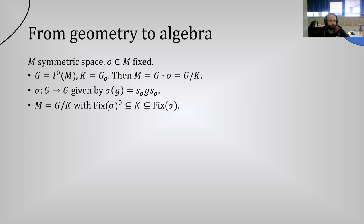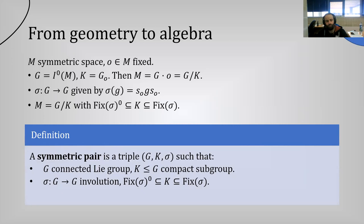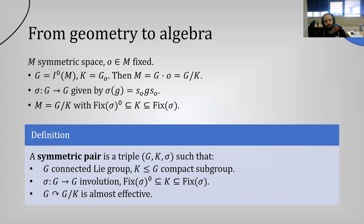We take these algebraic properties and promote them to a definition. A symmetric pair is a triple (G, K, sigma) such that G is a connected Lie group, K is a compact subgroup, and the involution sigma satisfies that K lies between the fixed-point set of sigma and its identity component. We also impose the technical condition that the action of G on the homogeneous space G/K is almost effective, meaning only finitely many elements of G act as the identity map.